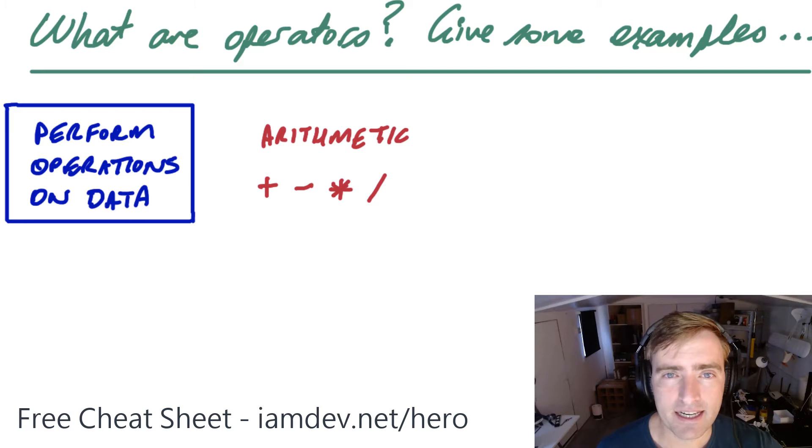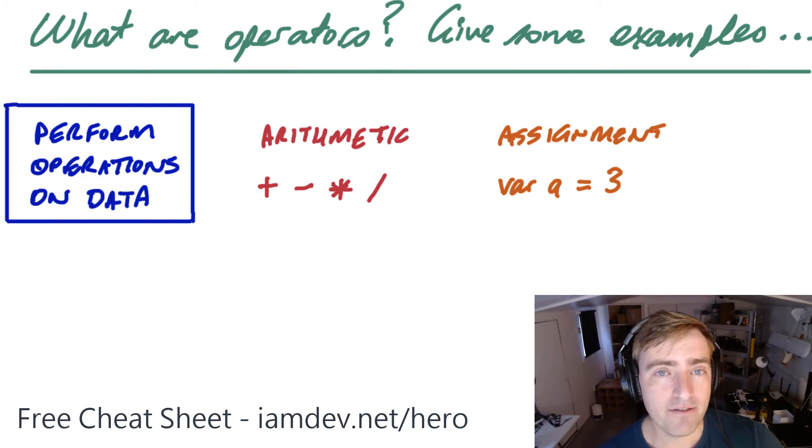But what you don't realize is you've been using an operator this whole time, every single day, almost every single line. And that is the assignment operator. So when you say var something equals something, you've assigned a value into that variable. So var a equals three, you've assigned three into a.